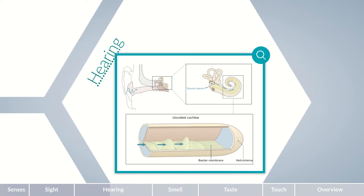Incoming sound waves initially cause the anterior part of the basilar membrane to vibrate. These vibrations travel along the cochlea until they decay. A key factor in hearing is that the position of maximal vibration of the basilar membrane depends on the sound wave frequency, leading to a spatial resolution of sound frequencies. High-frequency sound waves cause maximum motion near the oval window, while low-frequency waves peak near the helicotrema.